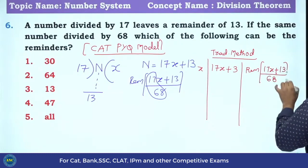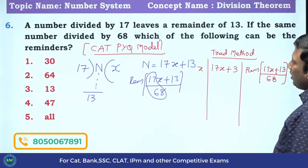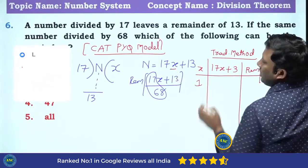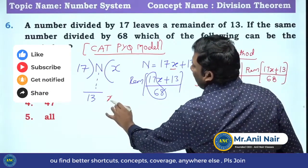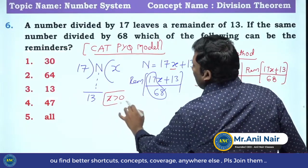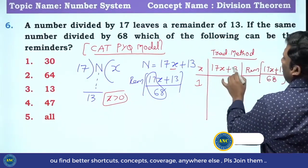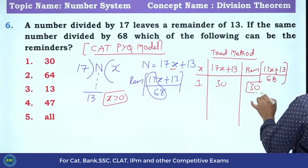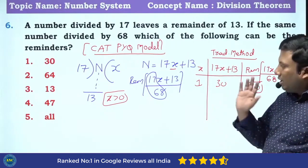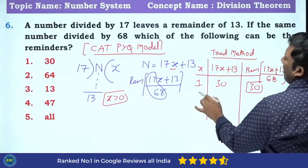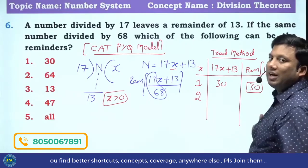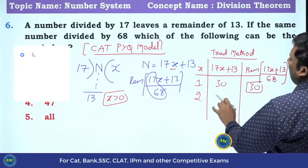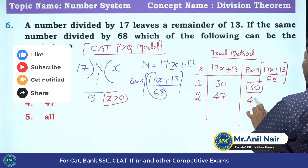Let us take X value one by one. The quotient X must be greater than 0. If X is 1: 17 plus 13 equals 30. 30 divided by 68 — the remainder is 30.